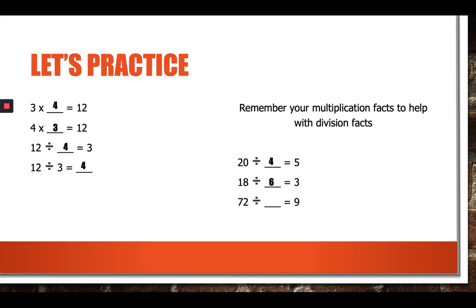72 divided by what number equals nine? Let's remember our multiplication fact. Nine times what equals 72? Nine times eight equals 72.